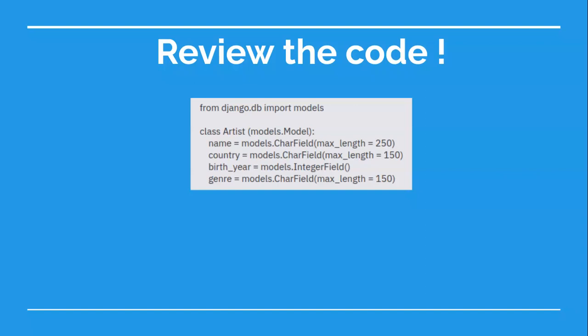Artist is the name we're giving to our model. Usually a model name should start with a capital letter. You can name it anything you want, but it's better to be meaningful and something easy to remember. Next, we are creating the properties of our model. The first one is the name of the artist — this field is of type CharField with a max length of 250, meaning it can hold up to 250 characters. The country field is the same type but with only 150 characters. The next field is birth year, which is an IntegerField — an integer, for example 1988. The last one is genre, which is just another CharField like name and country.